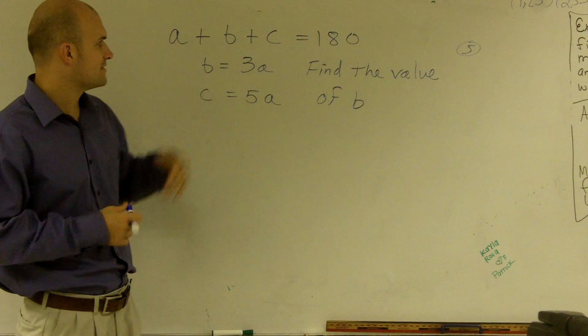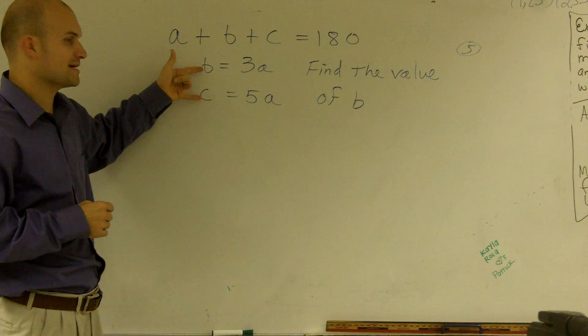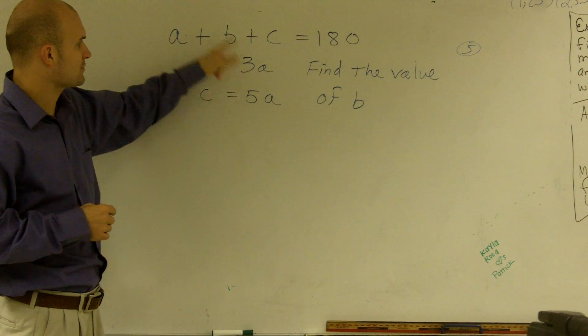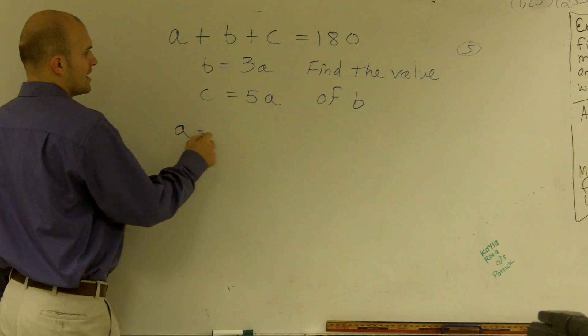And then they want us to find the value of b. What I can do is use substitution by substituting my b for 3a and my c for 5a. So let's see what that looks like. Because then, if I do that,